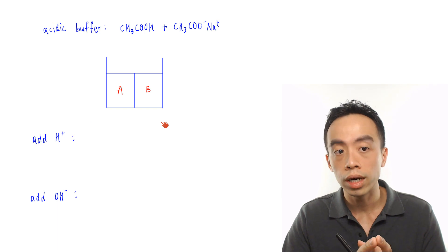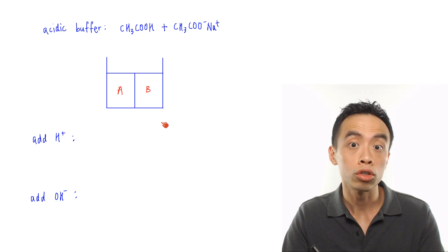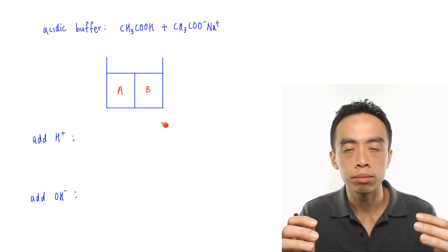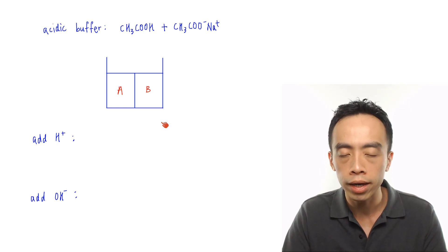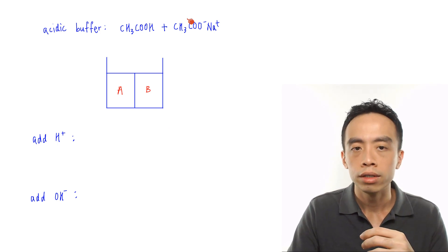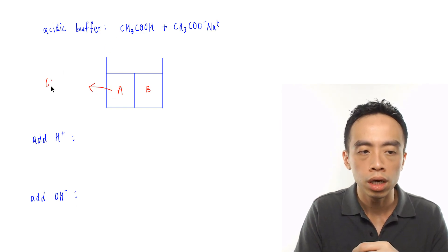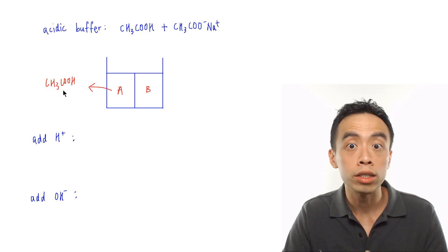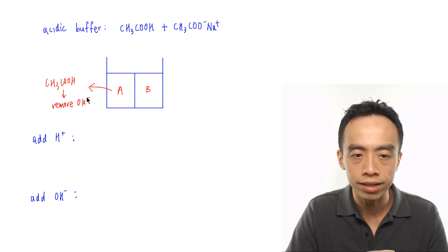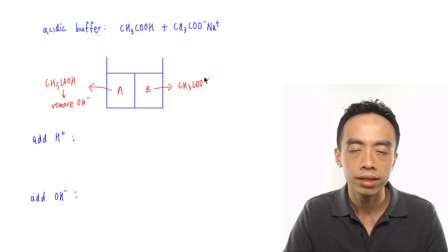An acidic buffer is a mixture involving a weak acid and its conjugate base. The conjugate base is more important to focus on than the word 'salt'. In this case, CH3COOH is the acid — its purpose is to remove OH-. CH3COO- is the base, and its job is to remove H+.